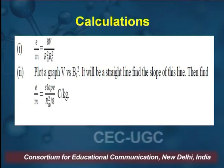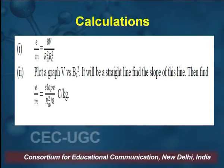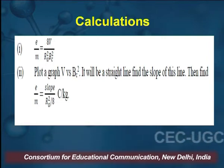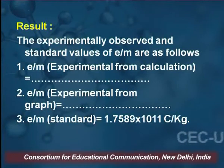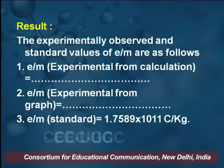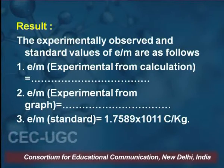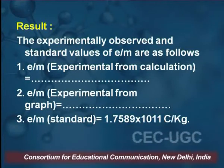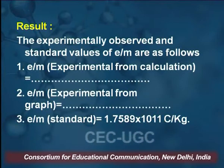The formula to calculate e/m is: e/m = 8V / (Ra² × Bc²). As we get all values through the experiment, we plot the V versus Bc² graph, which will be a straight line. We find the slope of this line and calculate the e/m ratio in coulombs per kilogram. Experimentally, we observe the standard value of e/m and compare with the calculated value.